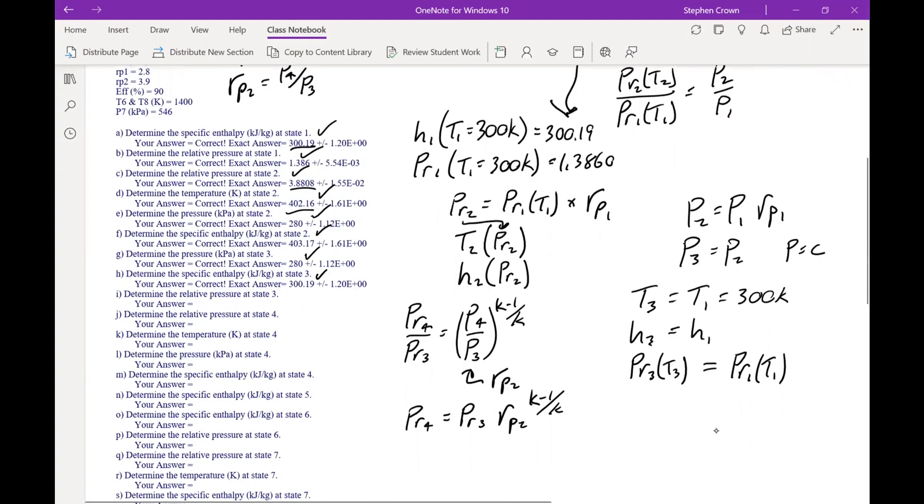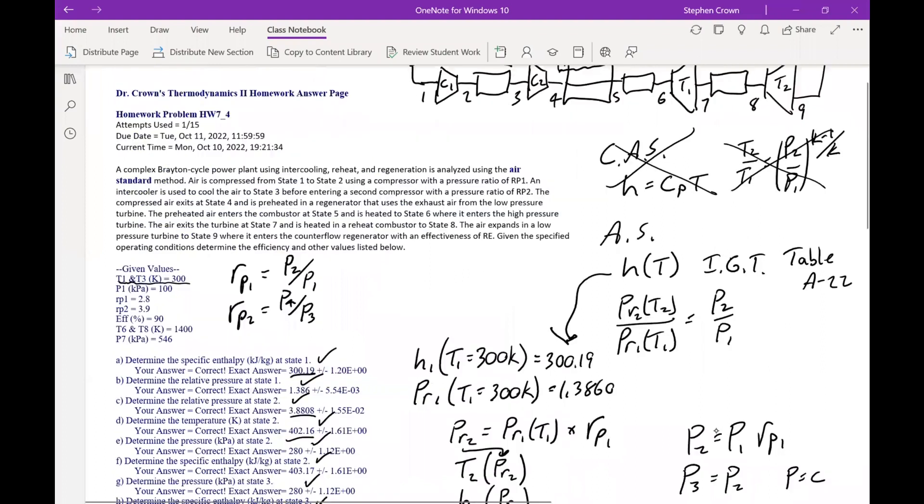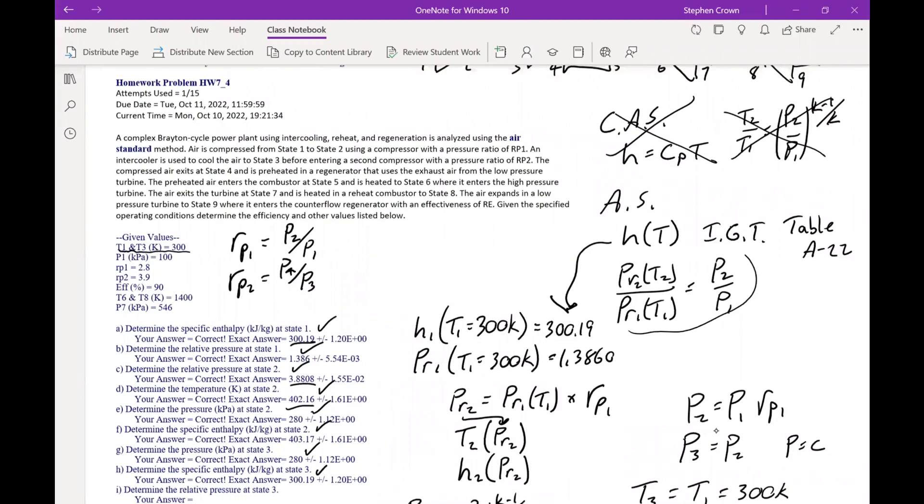So then I have PR4, and the problem goes on. Really, that difference is just once we know the temperatures, instead of using CPT, we use the tables to find the enthalpies from the temperatures. We use the tables to find PRs from the temperatures. And then for our isentropic processes, we use this relationship instead of this one that I've crossed out here. So don't use those relationships for an air standard problem.